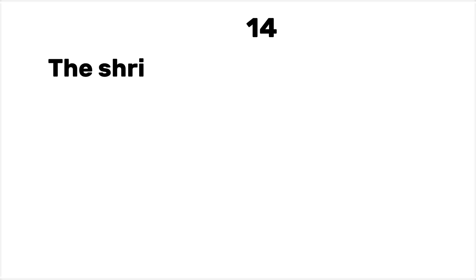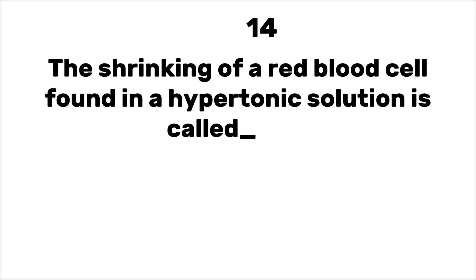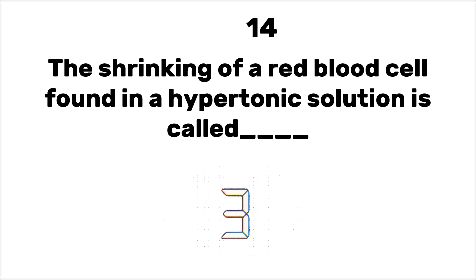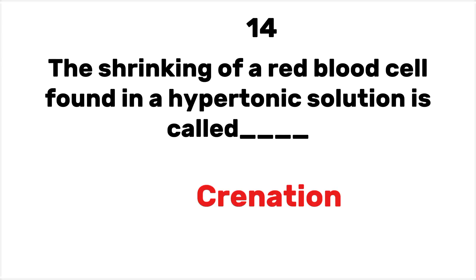Number 14. The shrinking of a red blood cell found in a hypotonic solution is called? This shrinking is due to the continuous movement of water out of the red blood cell.